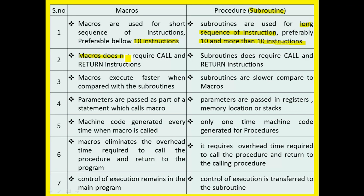Macros do not require call and return instructions, whereas for subroutines there will be a requirement of call and return instructions. And these macros are executed faster when compared with subroutines, while subroutines are slower compared with macros.